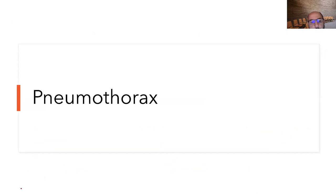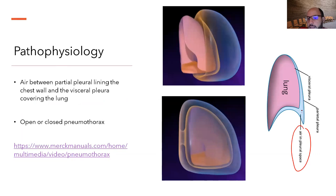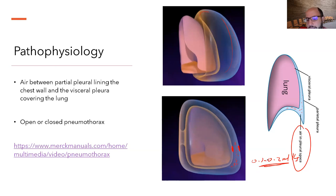Pneumothorax is defined as air between the two layers — air inside the pleural cavity. The lung is covered by two layers: the visceral pleura on the inside and the parietal pleura on the outside. The pleural space normally contains about 0.1 to 0.2 ml per kg of fluid with protein concentration less than 0.5 g per deciliter, which helps the lung recoil.